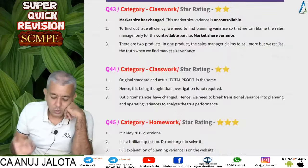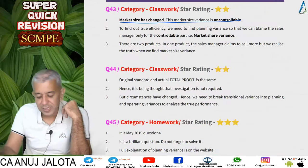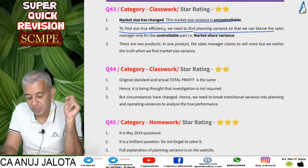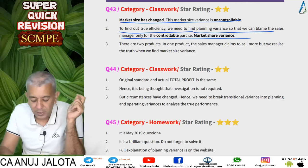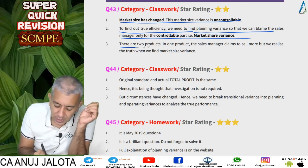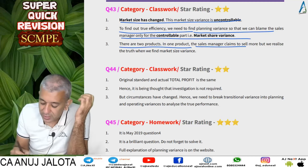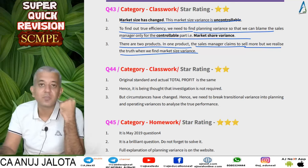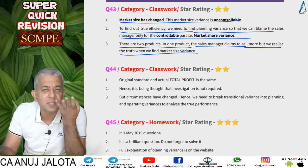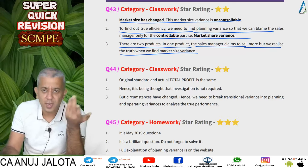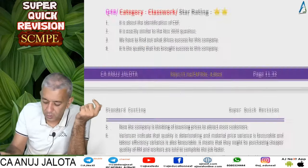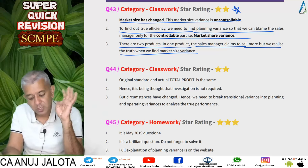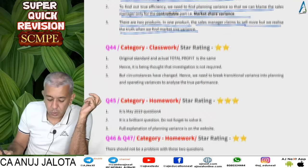Market size variance is uncontrollable. To evaluate efficiency properly, we find the planning variance so we can blame the sales manager only for the controllable part — the market share — and not the market size. In this case, the market size variance was very favorable but uncontrollable. The manager's job was market share, and he failed on that front. This is a two-star question but I am upgrading it to a three-star question.